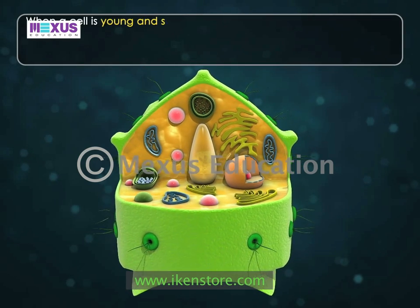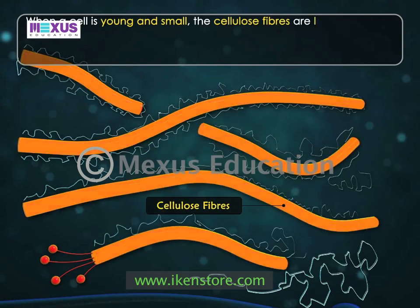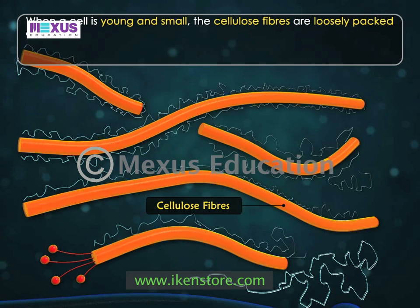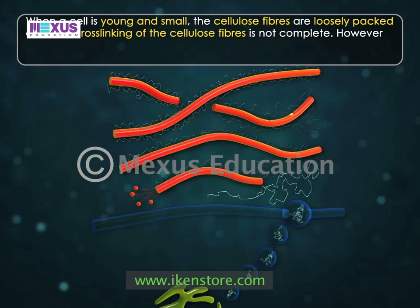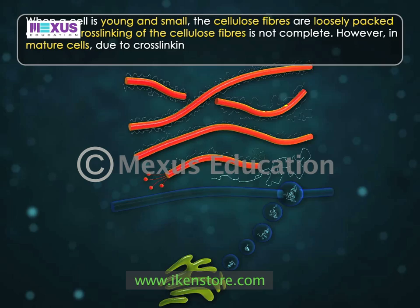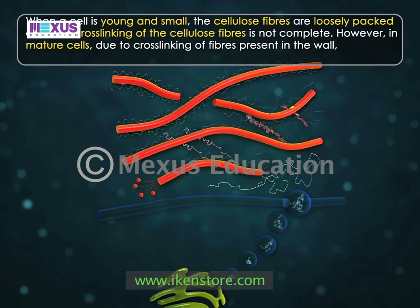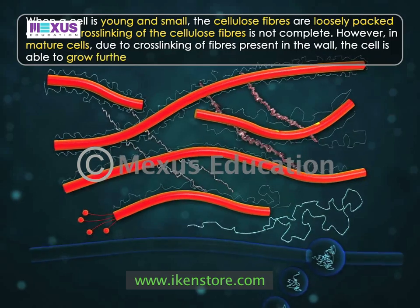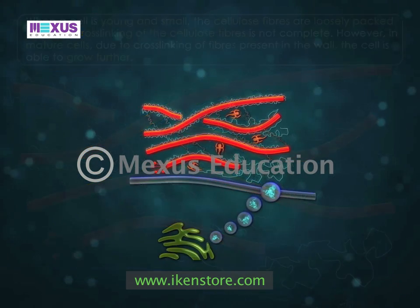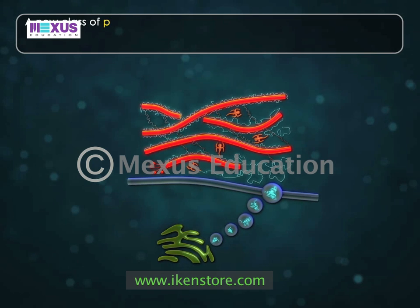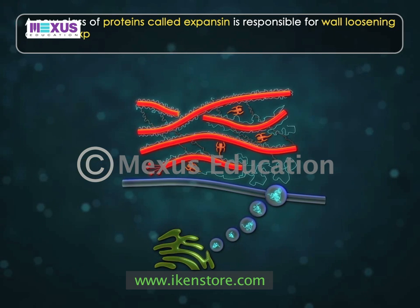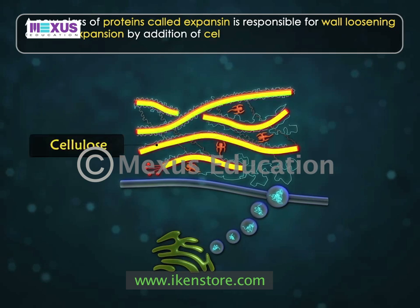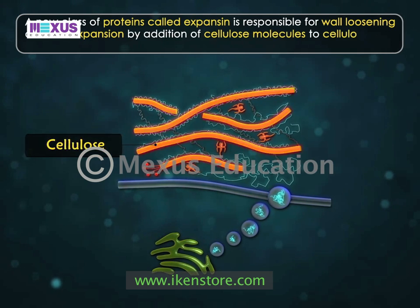When a cell is young and small, the cellulose fibers are loosely packed and cross-linking of the cellulose fibers is not complete. However, in mature cells, due to cross-linking of fibers present in the wall, the cell is able to grow further. A new class of proteins called expansin is responsible for wall loosening and cell expansion by addition of cellulose molecules to cellulose microfibrils.